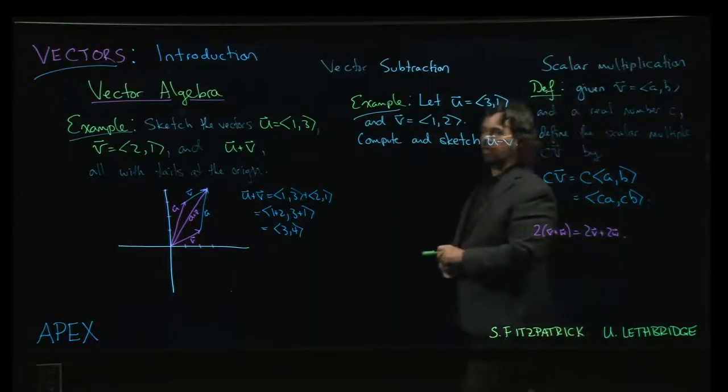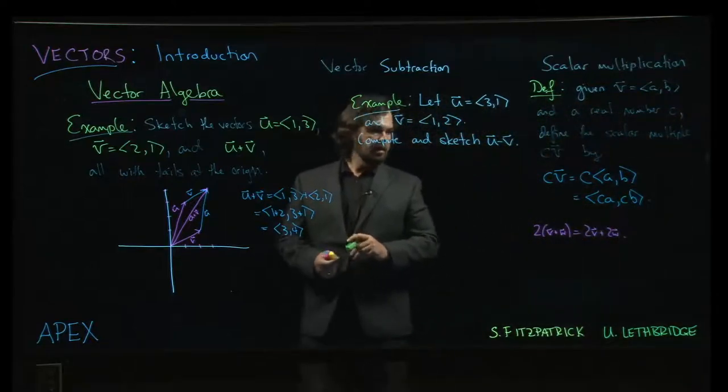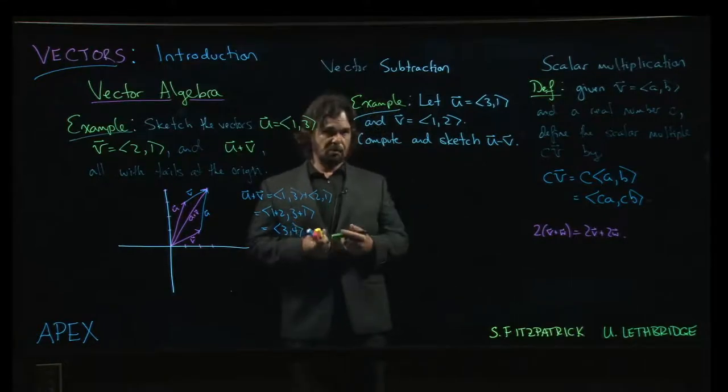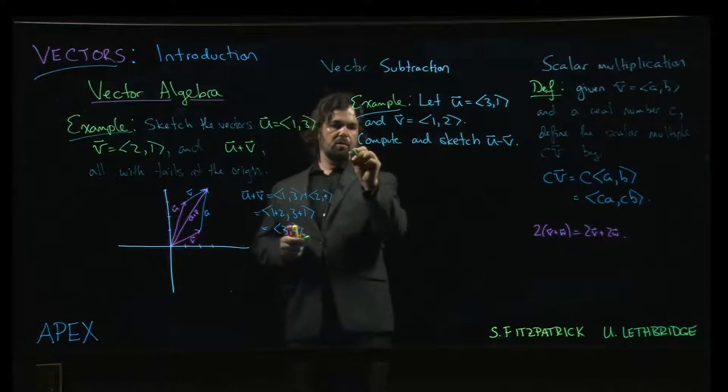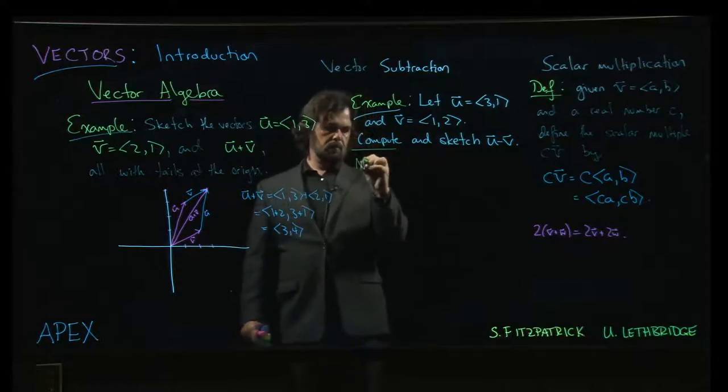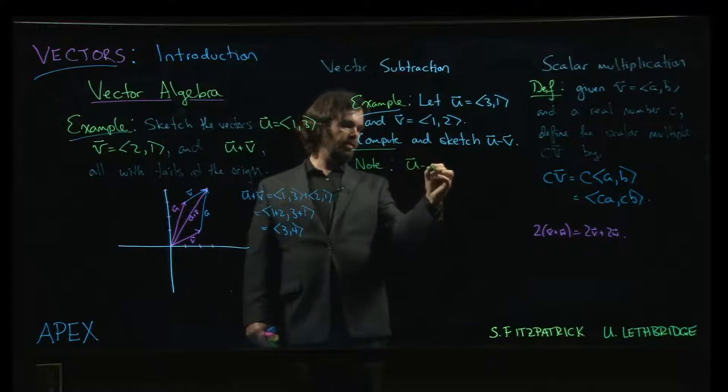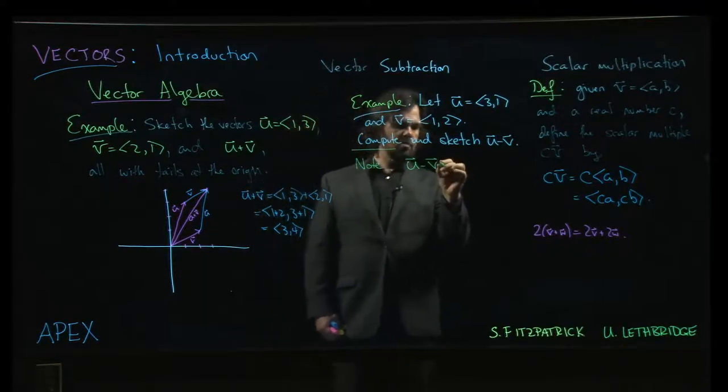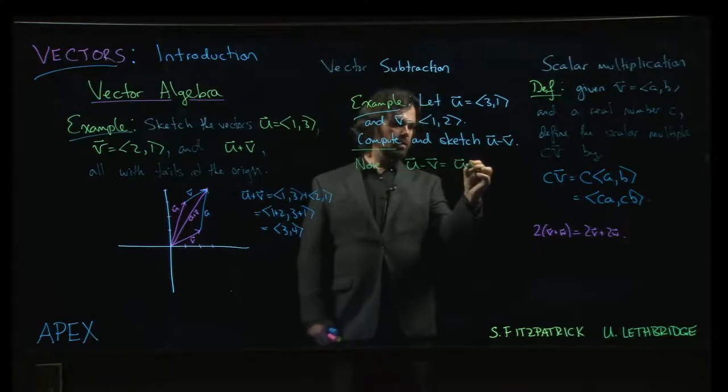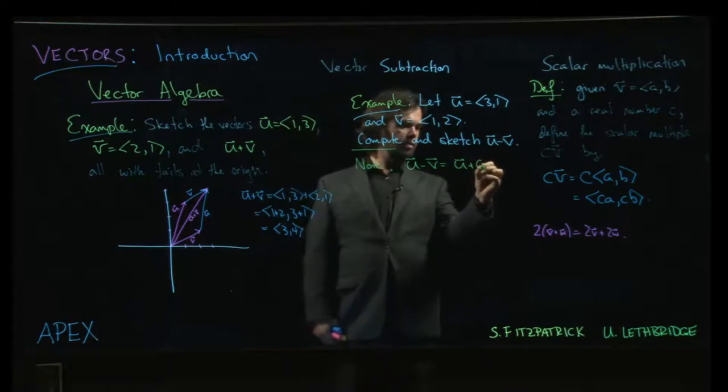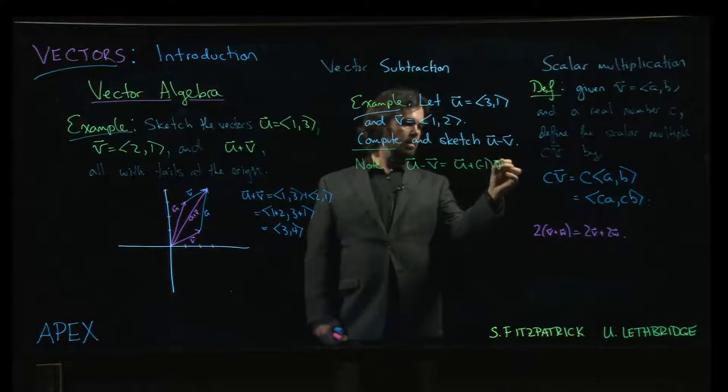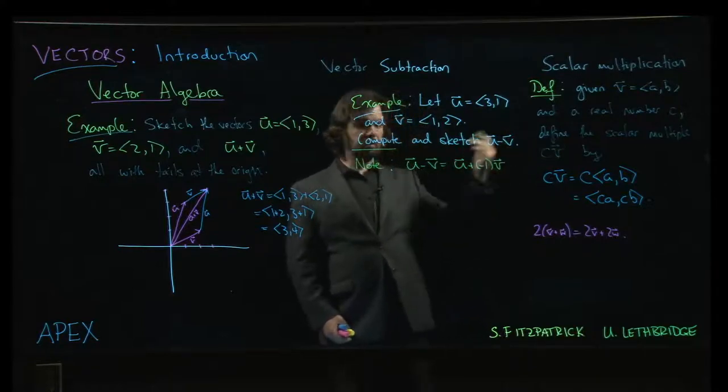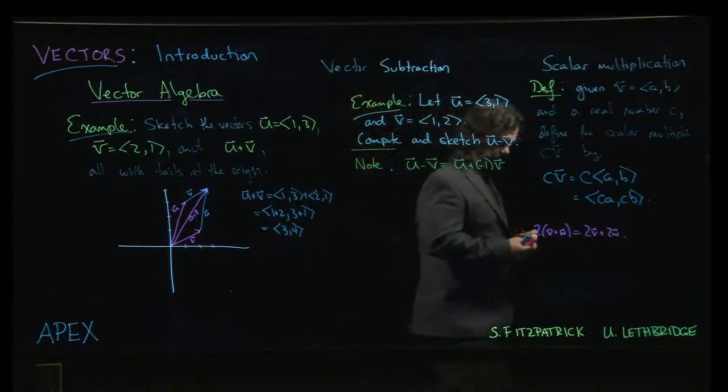So next we're going to talk about subtraction. And there are a few ways to think about how subtraction should work. One is just to note that u minus v, and we can take this as a definition if you like, u minus v is just u added to minus 1 times v using our definition for scalar multiplication.